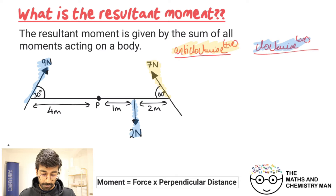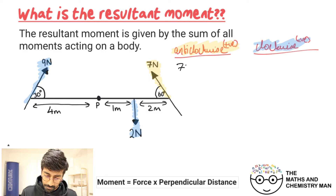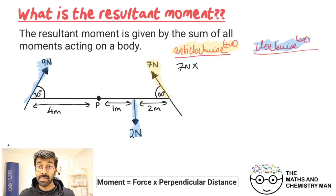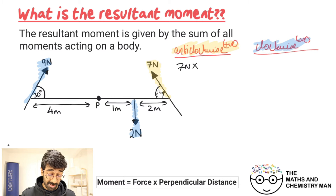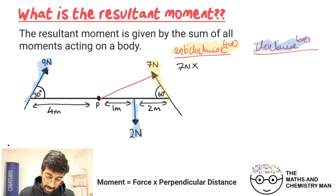In the clockwise direction we have the nine Newton force and the two Newton force. Starting with the anti-clockwise: seven Newtons, but we need the perpendicular distance. The three meters is at an angle of 60 degrees, so we need to do some work. We draw a perpendicular line from P to the force, creating a right angle triangle.